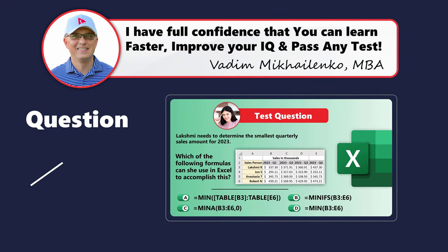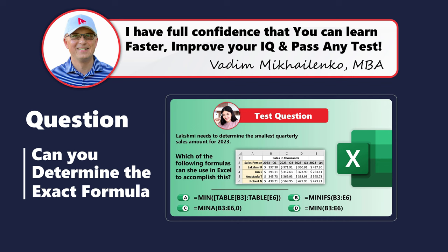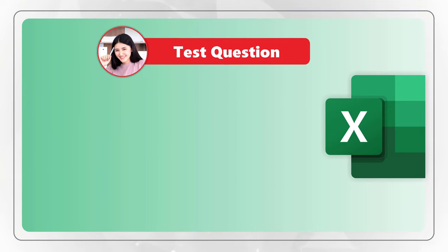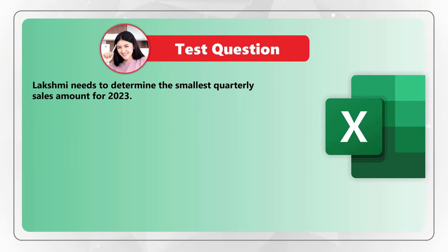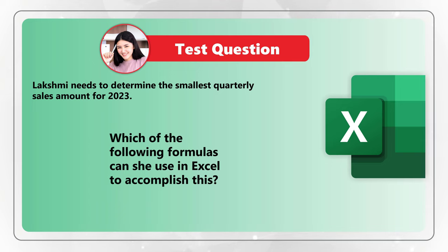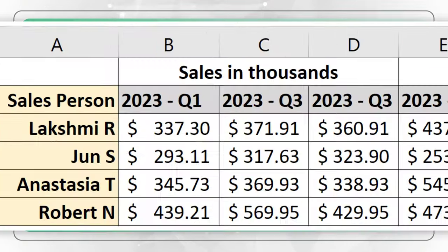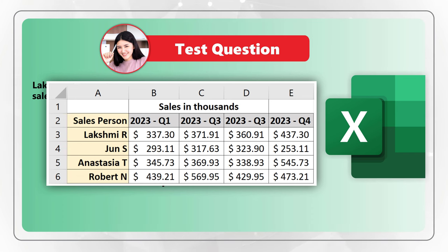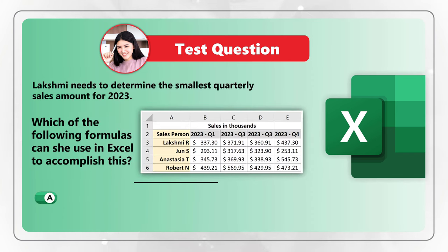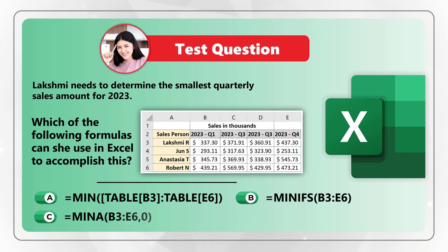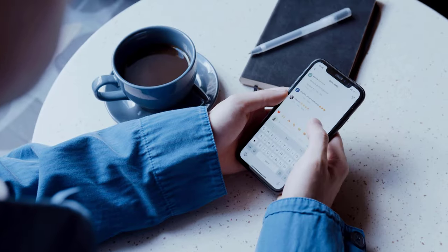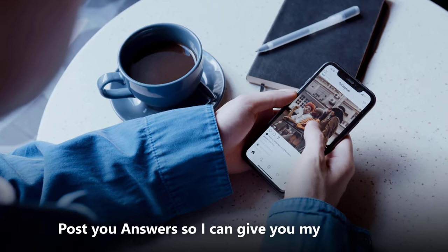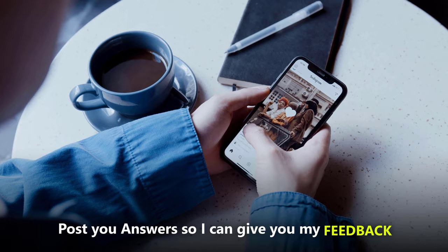I have a surprise practice question for you. Lakshmi needs to determine the smallest quarterly sales amount for 2023. Which of the following formulas can she use in Excel to accomplish this? You are presented with the dataset and four possible choices: A, B, C, or D. Take a close look to see if you can select the right answer, and once ready, post your answer and solution in comments so I can give you my feedback. Good luck!